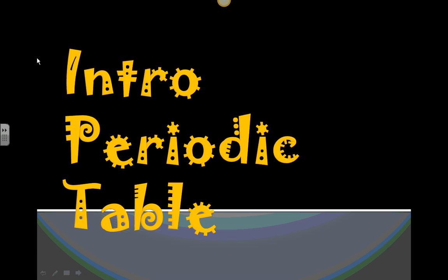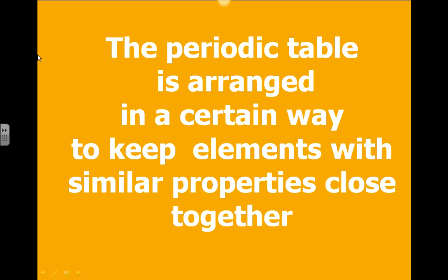Hello, students. Today we're going to learn about the basic groups of the periodic table. The periodic table is arranged in such a way that keeps elements of similar properties together.